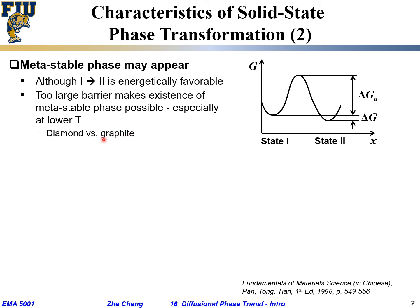One example is diamond versus graphite. Both diamond and graphite are pure carbon in terms of elemental composition, but graphite is the most thermodynamically stable phase at ambient conditions and room temperature. However, even though diamond has a higher energy state than graphite, diamond crystals do not readily transform into graphite at ambient conditions because of the huge activation energy and slower diffusion.